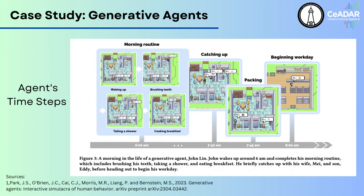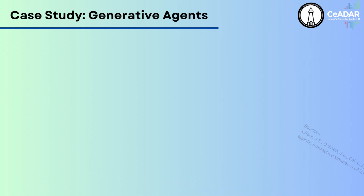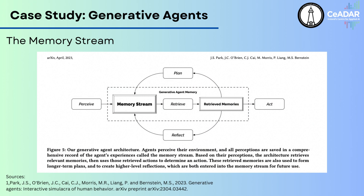The agents interact with the world through actions and with each other through natural language. At each time step, the agent outputs a natural language statement describing its current action, which is then translated into concrete movement in the sandbox world. The agent's actions and experiences are recorded in a memory stream — a long-term memory model that stores the agent's experiences in natural language. The memory stream serves as a detailed log of agent behavior and is a rich source of synthetic data. It also plays a role in an agent's interactions with other agents.